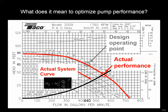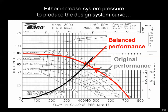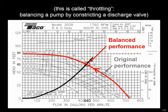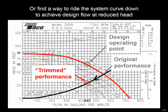So what can we do with this information, and what does it mean when we talk about pump optimization? There are really two main options. The first is to find some way to increase the system pressure to provide the design flow that's required — essentially steepening your curve. We would call that throttling, and that's essentially what we do when we balance a pump with a discharge valve by constricting its opening. The other option is to ride that system curve down and find a new operating point that meets the GPM requirement at a reduced pressure. We might call this trim performance.